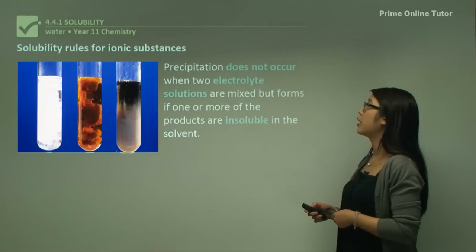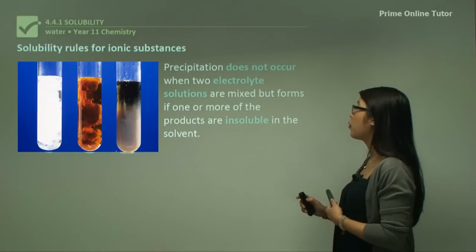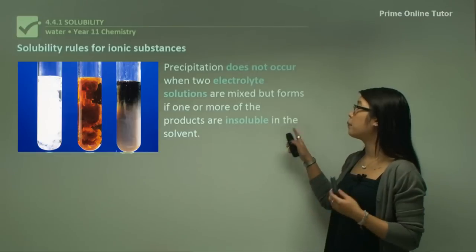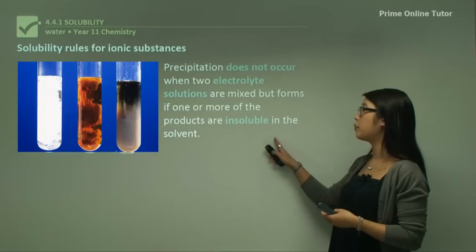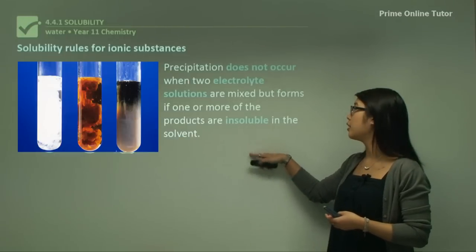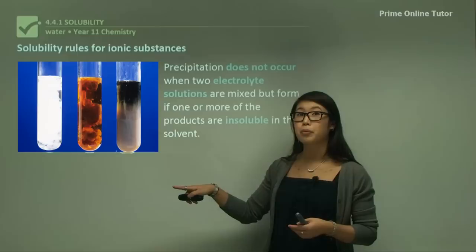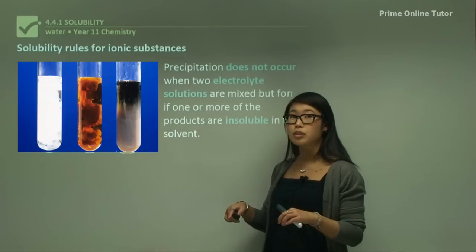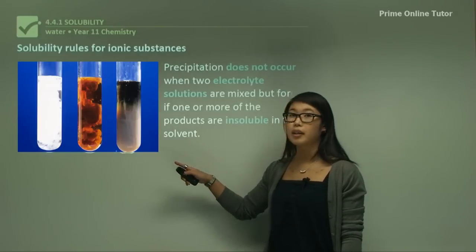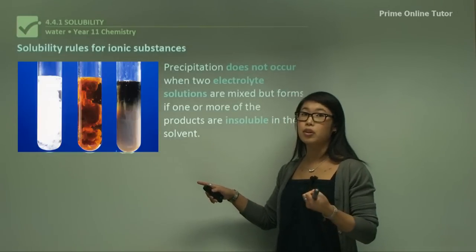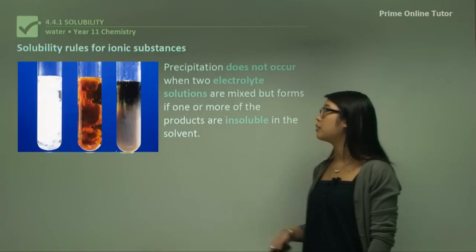Precipitation reactions don't occur when two electrolyte solutions are mixed, but only if one of them, when mixed together, forms a chemical reaction to produce an insoluble product. In these cases, we add two solutions together, there's a chemical reaction between them, and they form something that creates a solid and looks like murkiness in the water.